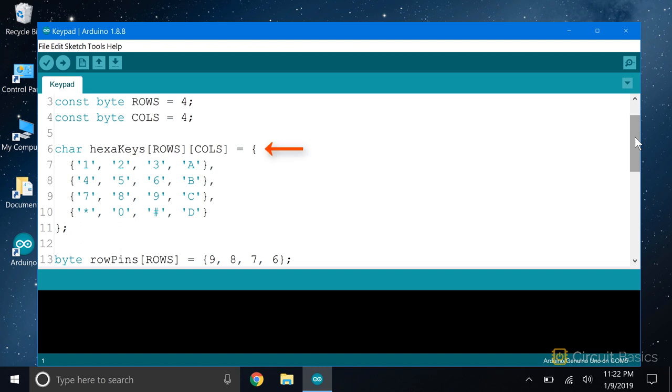Here we declare a two-dimensional array that defines the keys on the keypad. The elements in the array correspond to the values that will be output when you press a key. You can change these if your keys are laid out differently. This is the name of the array, and these are the sizes of the array. The rows correspond to the value that was set up here, and columns refers to the number set up here.